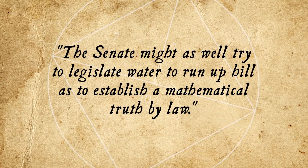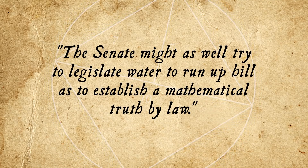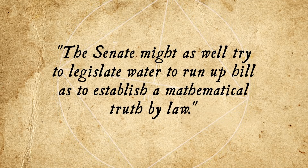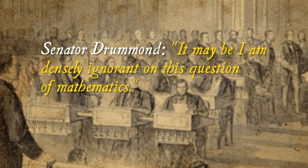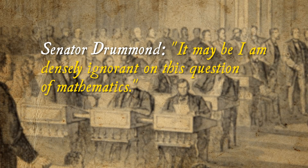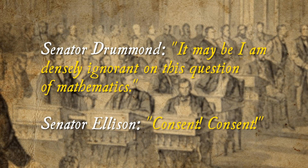On February 12, 1897, Senator Hubble summed up the sentiment of most, stating: "...the Senate might as well try to legislate water to run uphill as to establish a mathematical truth by law." Of course, the Senators didn't really understand what the bill said either. Being a body known for its lack of propriety and propensity to tell jokes, skylark, and make noise, the Senate proceeded to ridicule the bill for another 30 minutes, with exchanges such as — Senator Drummond: "...it may be I am densely ignorant on this question of mathematics." Senator Ellison: "...consent, consent." After the laughter died down, the bill was dropped.